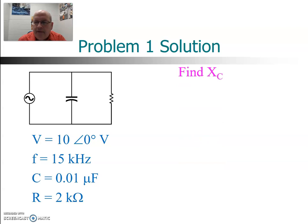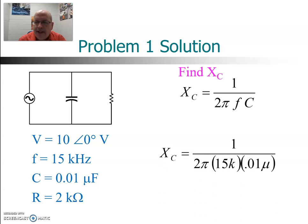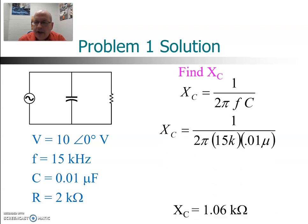So in order to do that we have to first of all find the capacitive reactance. X of C is equal to 1 over 2 pi FC. We'll plug our numbers in, do the arithmetic, you get a value of X of C 1.06 kiloohms.